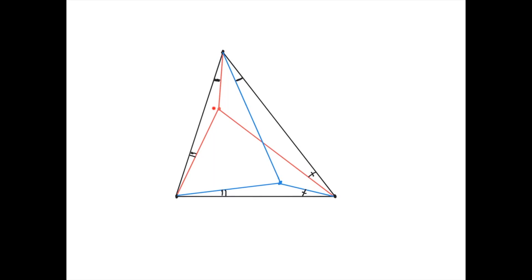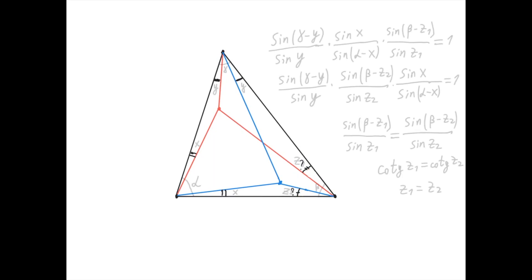Now I'm going to prove that for all points in the plane there exists a corresponding isogonal point. I'm going to take a random point in the plane, construct the isogonal of each cevian line at two vertices, intersect the two isogonal lines at a new point, and then prove that the line from the third vertex through this new point is also the isogonal — meaning this angle equals this angle.